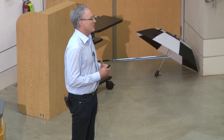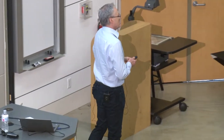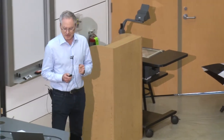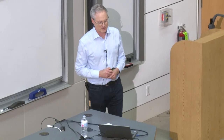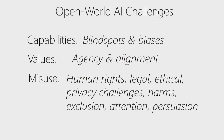Last year, MSR got together with our legal team at Microsoft and wrote a book together called The Future Computed, free to download. We called out fairness, reliability, privacy, security, inclusiveness, transparency, and accountability as very important attributes to think deeply about in this world of machine intelligence. Open-world challenges include thinking about capabilities — blind spots and biases in our systems — about values, whether they're aligned with our values, who's the decision-maker, and whose preferences are represented in a system that might be affecting somebody else. Also misuse, human rights challenges, legal, ethical, and privacy challenges.